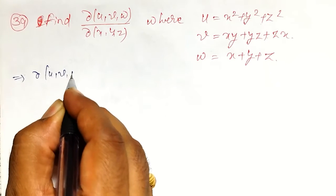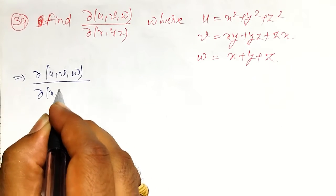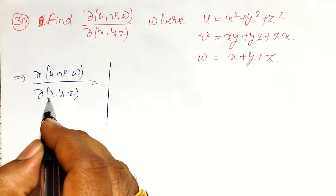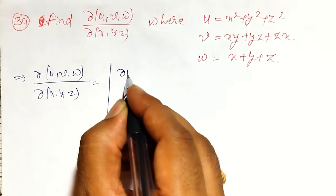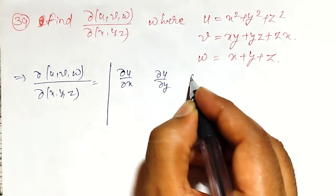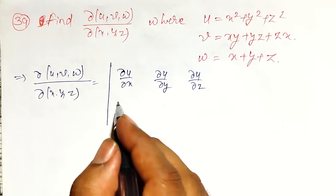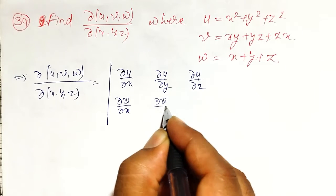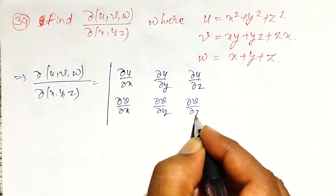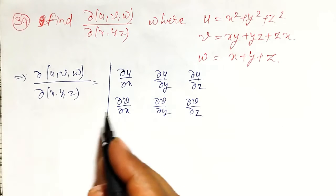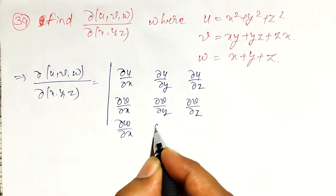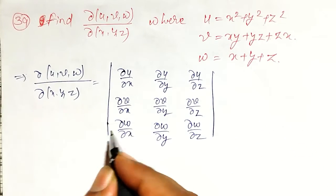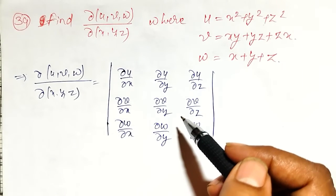Therefore, the Jacobian of u, v, w with respect to x, y, z is defined as a determinant. The first row elements are the partial derivatives of u: ∂u/∂x, ∂u/∂y, and ∂u/∂z. The second row elements are ∂v/∂x, ∂v/∂y, and ∂v/∂z. The third row elements are ∂w/∂x, ∂w/∂y, and ∂w/∂z. Using these 3 functions I have to find all 9 partial derivatives and evaluate this determinant.